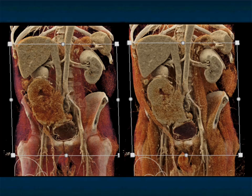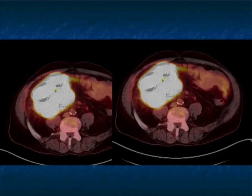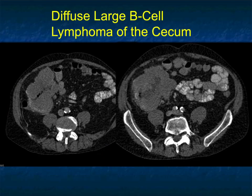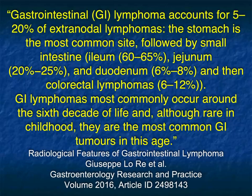Takeaway messages: when you see a bulky tumor, think lymphoma — particularly in the right colon. Look for ileal involvement. While an adenocarcinoma can obstruct the ileum, lymphoma is more likely to directly infiltrate into it. Colon lymphoma, like small bowel lymphoma and gastric lymphoma, is very positive on PET scan. A very nice example of diffuse large B-cell lymphoma.